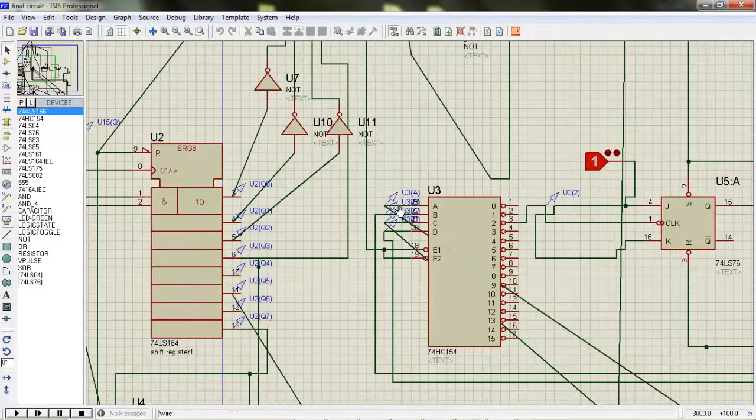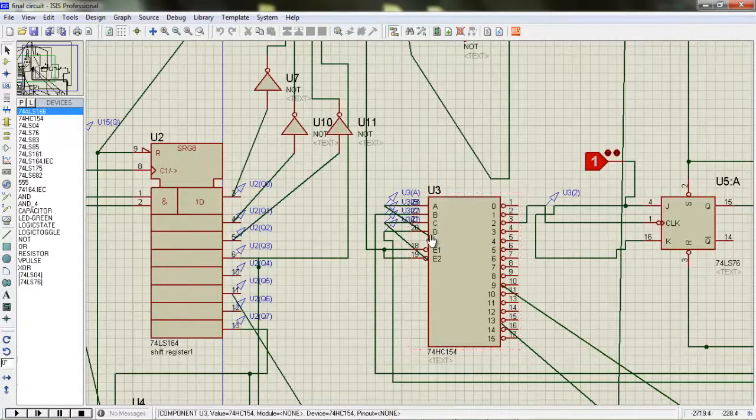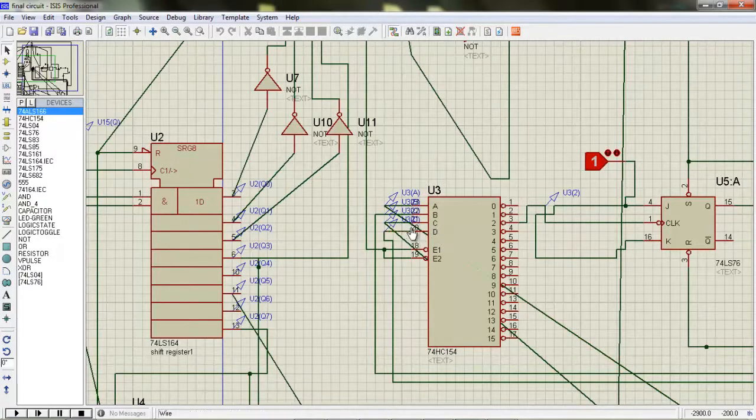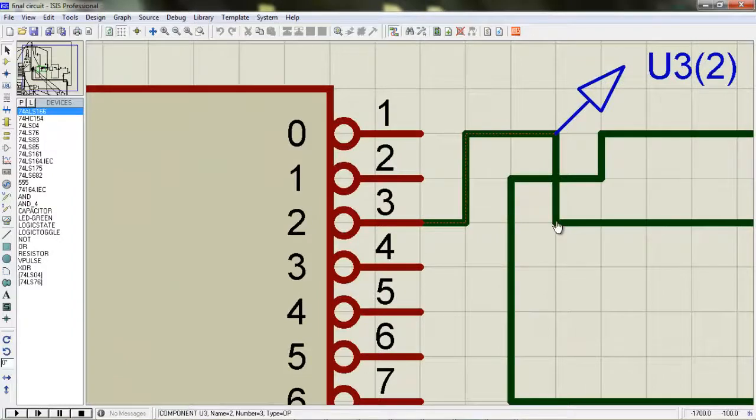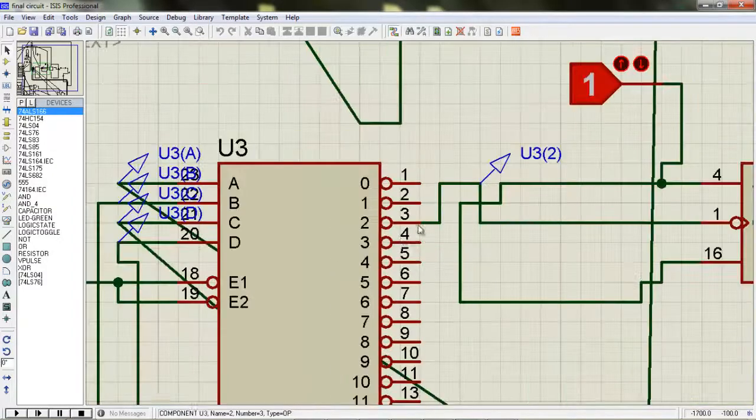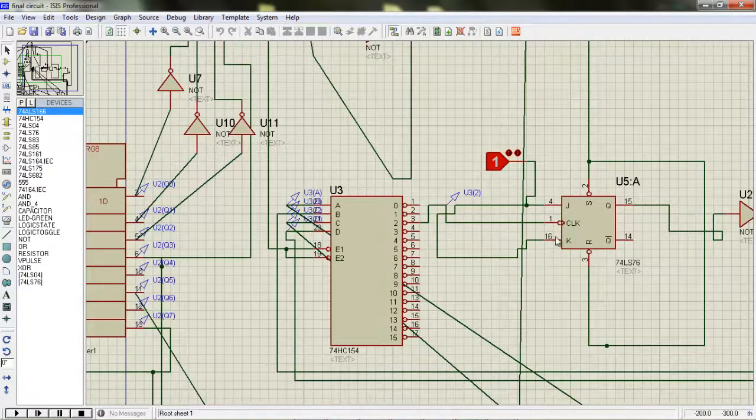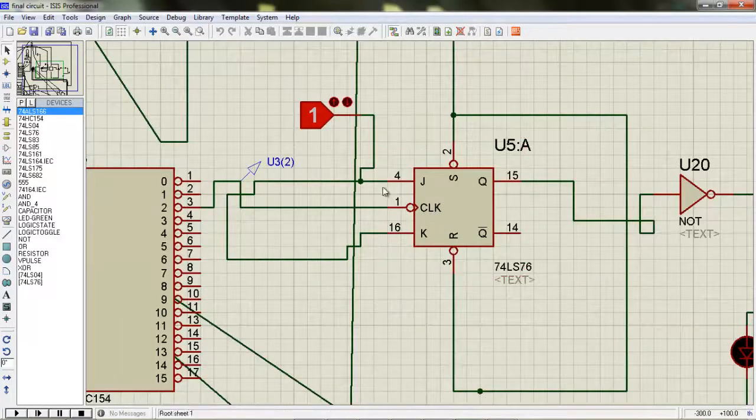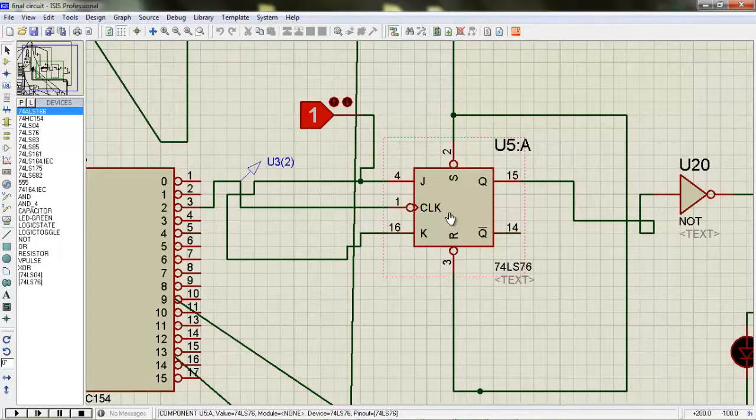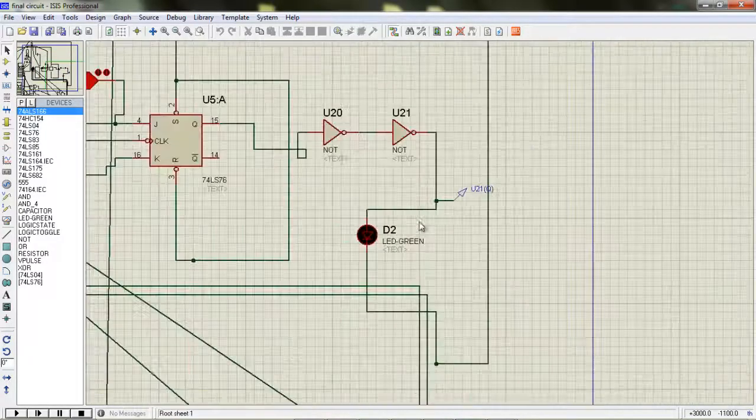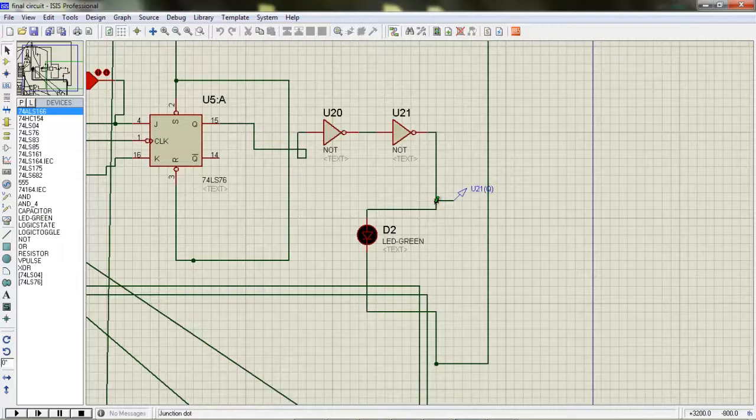As the decoder input receives a particular pattern such as 3, then the 3 point gets low. So that is a positive to negative transition. It now acts as a T flip-flop. So the output toggles.